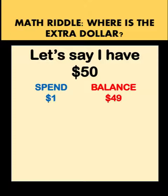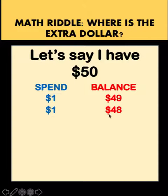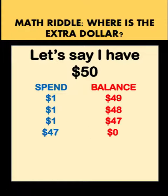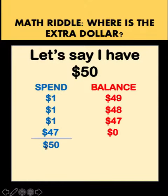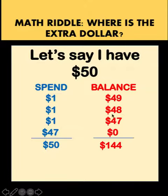Let's say I spent $1, so my balance would be 49. From this 49, I spent another $1, so my balance would be 48. I spent again another $1, and my balance would be 47. And finally, let's say I spent that remaining $47, and so my balance would be 0. If we add the spend column, we get $50, which is consistent with the amount I started with. But notice that in the balance column, the total would be $144, which is clearly way more than the $50 that I have.